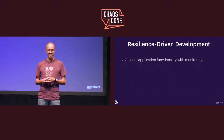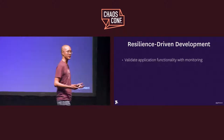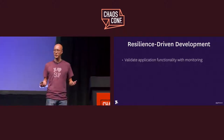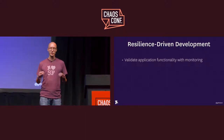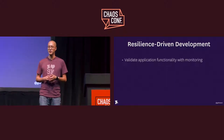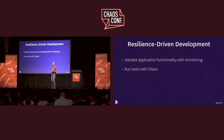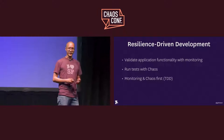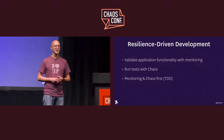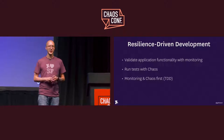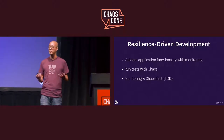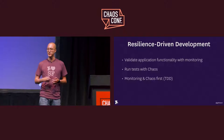So, resilience-driven development. Validate your application — validate the functionality with monitoring, not just with unit tests or integration tests. Actually be able to see that you're doing the things you want to do and that you're monitoring those. Run those tests with chaos. Start to think about chaos testing, not just chaos engineering — there's value in chaos as discovery, but there's also value in chaos as validating what you're supposed to be doing. And finally, monitoring and chaos up front. Stop thinking about it as an after-the-fact thing. Push it up front. Do it from the start. Thanks.